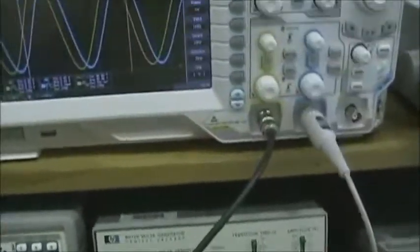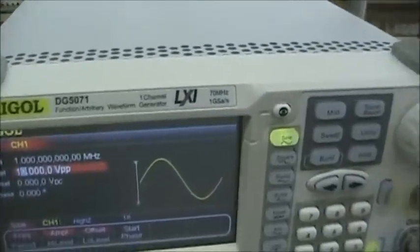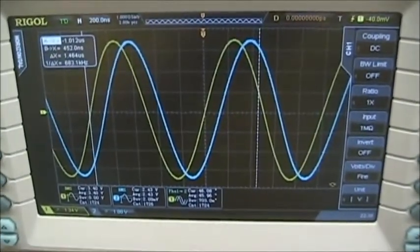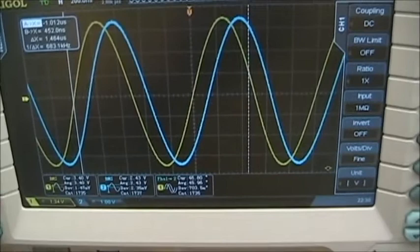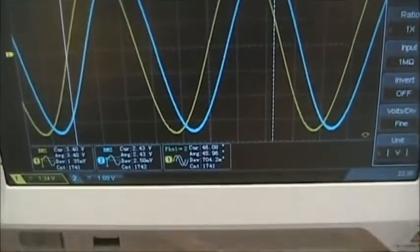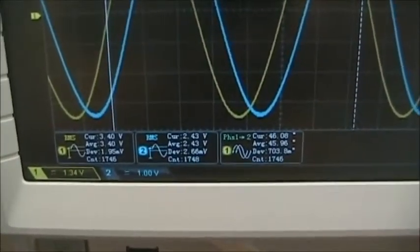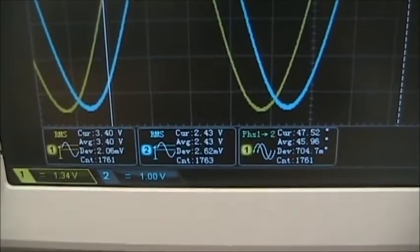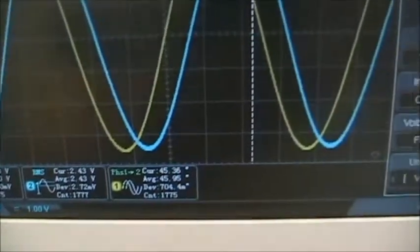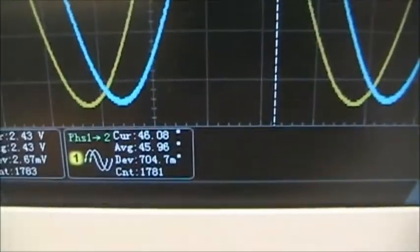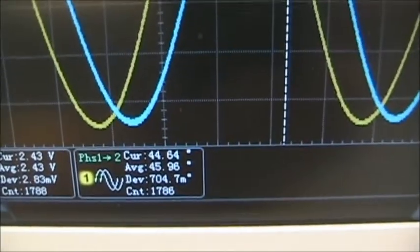On the scope, at 1 MHz, we see the two signals: the input magnitude, the output magnitude, and the phase between them. 3.4 volts RMS input, 2.43 volts RMS output, and an angle between them of 45 degrees.